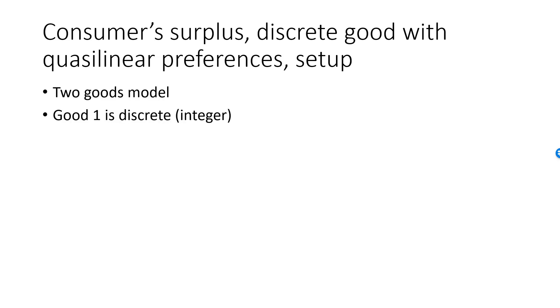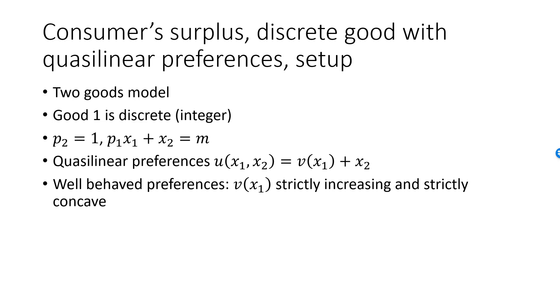We have a two-good model where good 1 is discrete and can only be consumed in integer values. We normalize the price of the second good to 1 such that the budget line equation is p1x1 plus x2 equals m. The quasilinear preferences can be represented by the utility function u equal to v of x1 plus x2. Preferences will be well-behaved, so we are imposing that v is strictly increasing and strictly concave. This will make the indifference curve strictly decreasing and strictly convex.